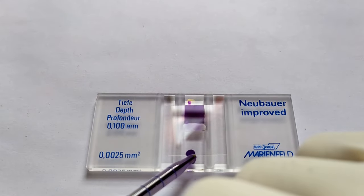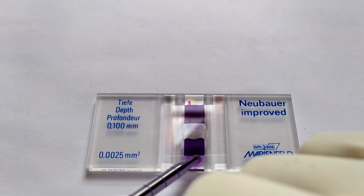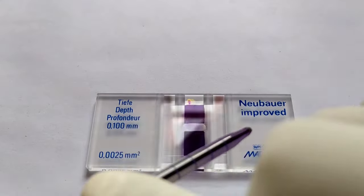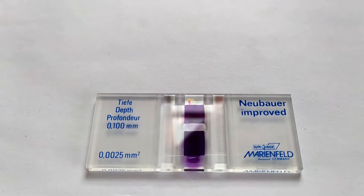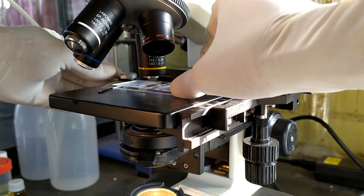You may load the other counting chamber as well in a similar fashion. Once you're done loading the chambers, keep aside the counting chamber for a few minutes to allow the WBCs to settle. The slide is now ready for microscopic observation.